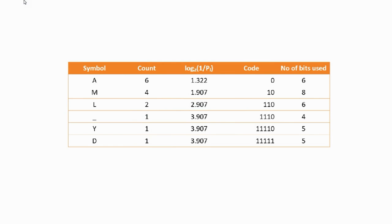The summary table includes symbol, count, log(1/P) to base 2, code, and the number of bits used. For symbol A, the count is 6, and the code represents the path from the root to the symbol. The path to A is branch 0, so the code is 0. The number of bits used is count multiplied by the number of characters in the code: 6 × 1 = 6.